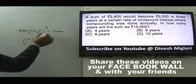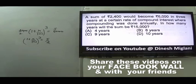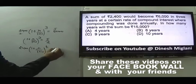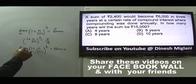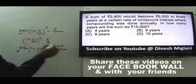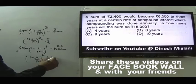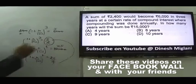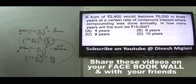Since (1 + r/100)³ = 5/2 and we require 25/4, which is (5/2)², we need to square both sides, meaning t = 6. So the answer is 6 years, option B.